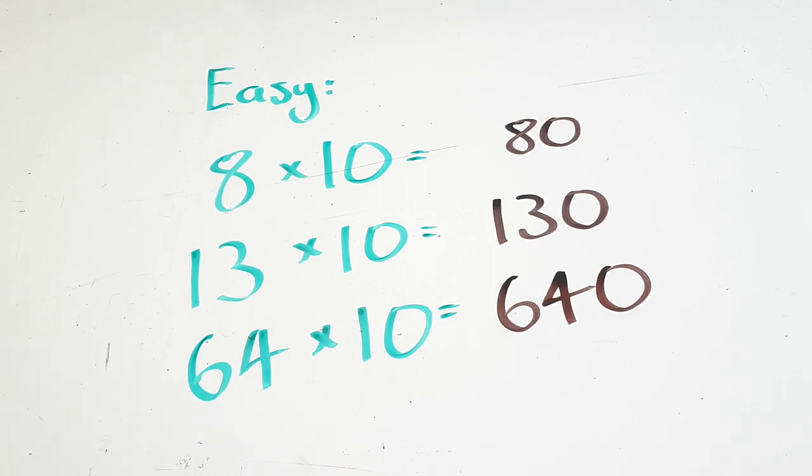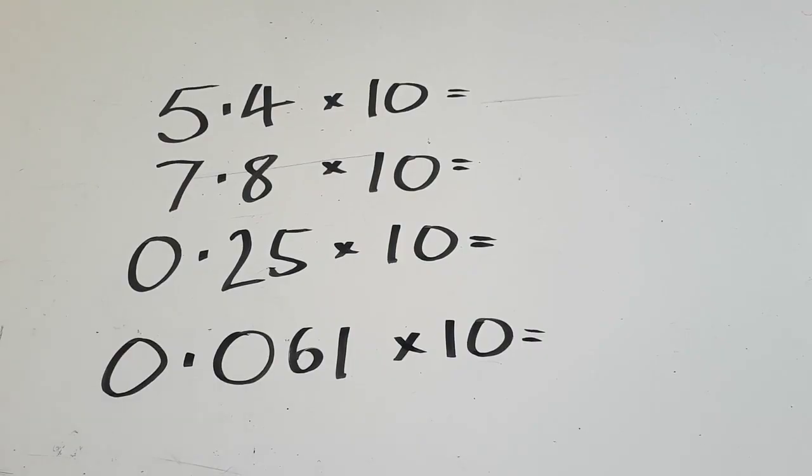Let's try some of the decimals. Have a look at these ones, all decimal numbers. In this case, 5.4 times 10, 7.8 times 10, 0.25, and 0.061. Have a go. See what you come up with. Pause the video here, and I'll get back to you in however long it takes you.